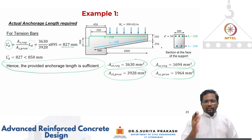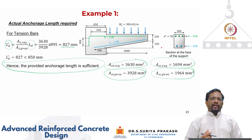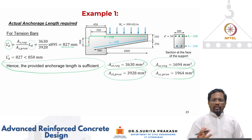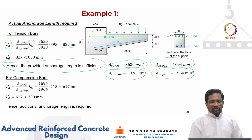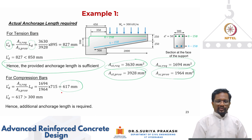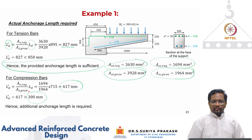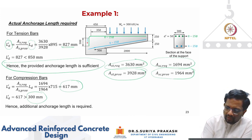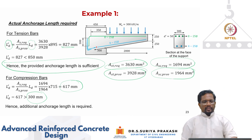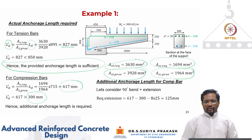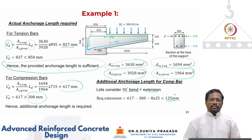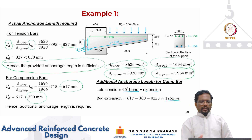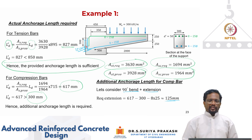However, in the instructor's opinion, it is not good practice to rely on over-design for anchorage. It is better to extend the bar by another 50 mm to develop the full yield stress of 0.87 fy. For compression bars, the reduced development length is 617 mm, but only 300 mm is available. The fix is to provide a U-bend: a 90-degree bend plus an extension of 125 mm, which meets the development length requirement.